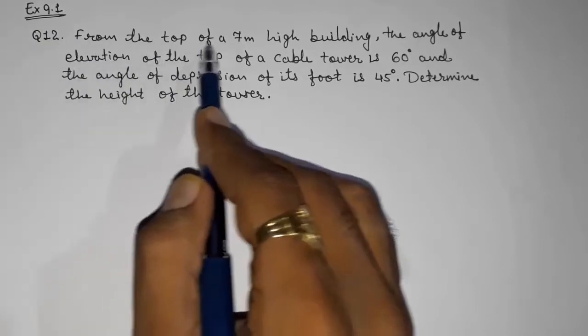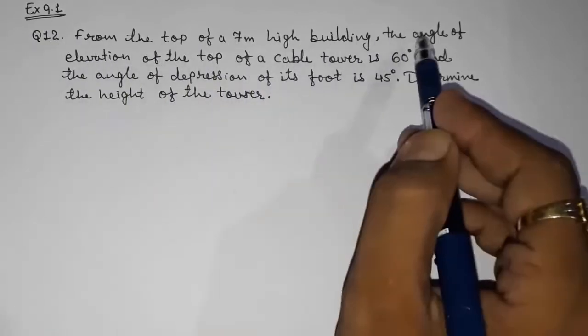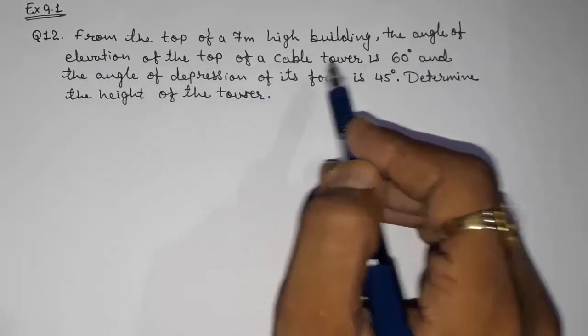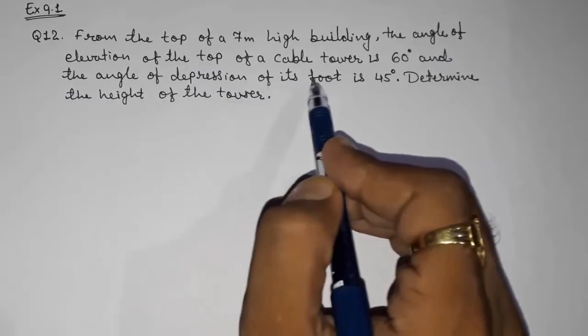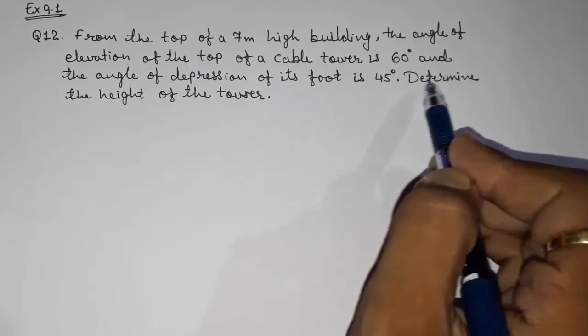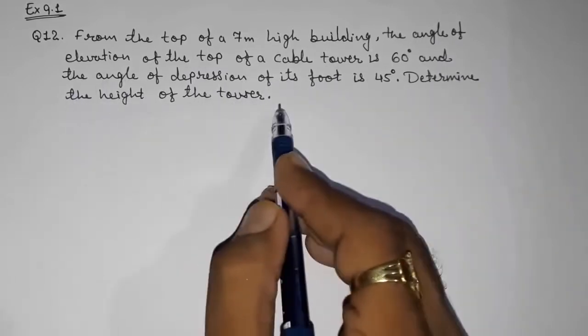From the top of a 7 meter high building, the angle of elevation of the top of a cable tower is 60 degrees and the angle of depression of its foot is 45 degrees. Determine the height of the tower.